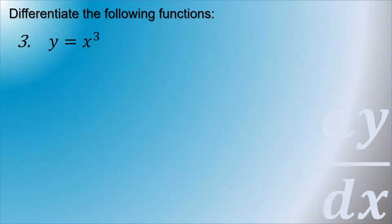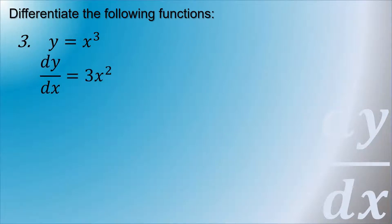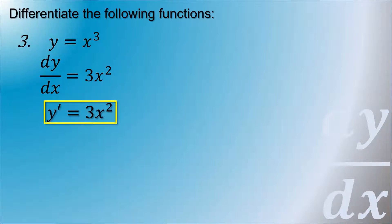Third example: y is equal to x cubed. Using the general power rule, we bring down the exponent. So dy/dx equals 3x squared, or y prime equals 3x squared, since 3 minus 1 is 2.